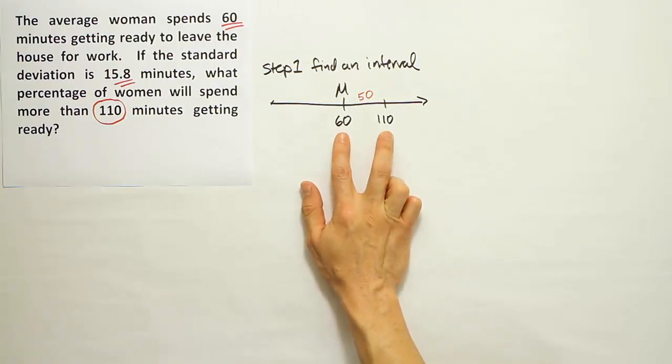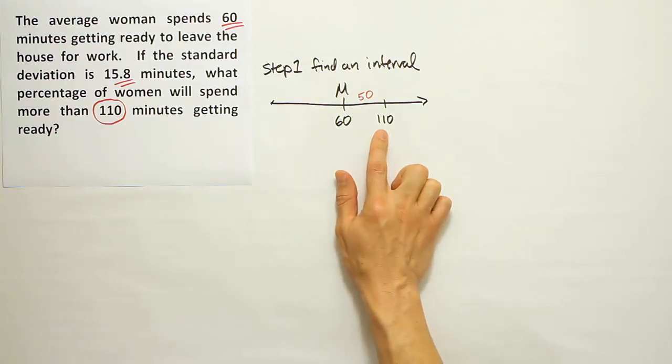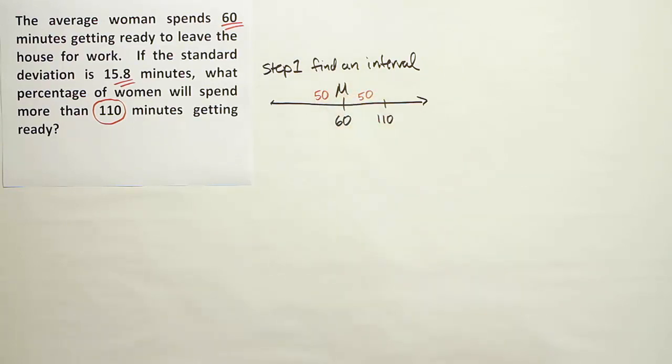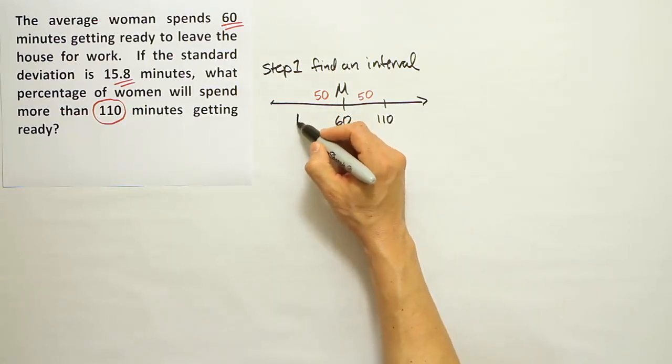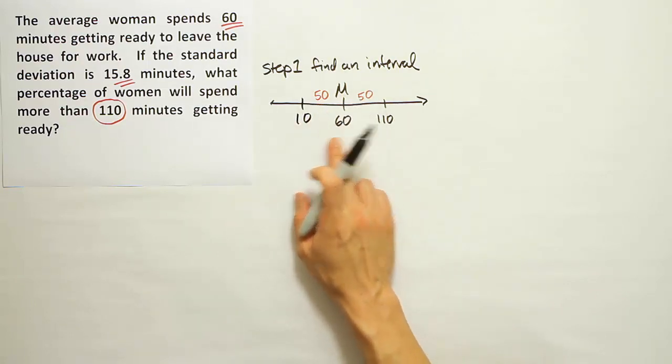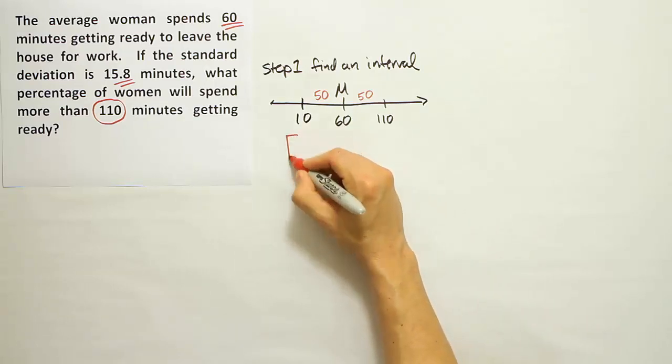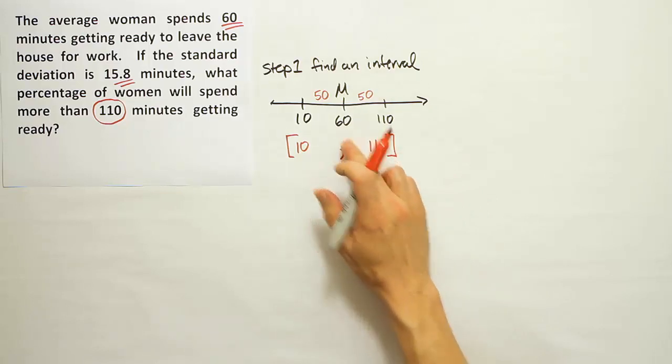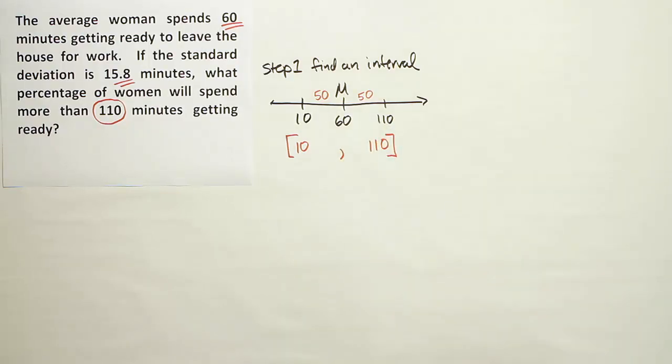The intervals involved in Chebyshev's theorem must be symmetric. So if from 60 to 110 is 50 units away, we have to have another space on the other side that's also 50 units away. It has to be below the mean because the interval has to surround the mean in a symmetric manner. If I take 50 from 60, I get 10. So the interval from 10 to 110 is symmetric around the mean, which means it's a candidate for Chebyshev's theorem.